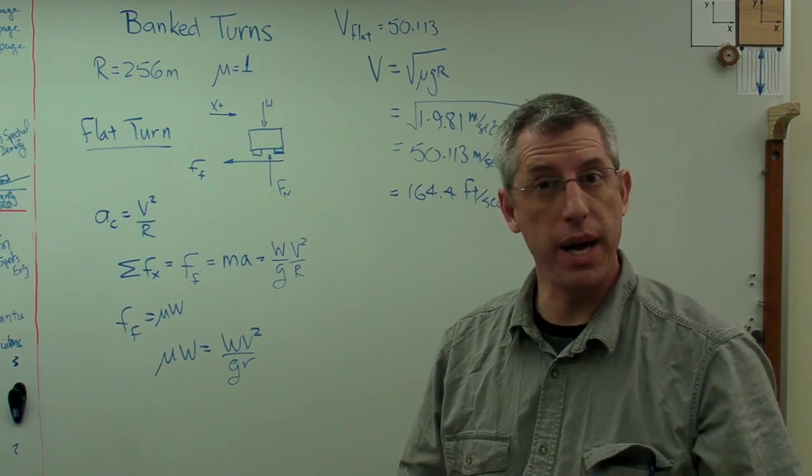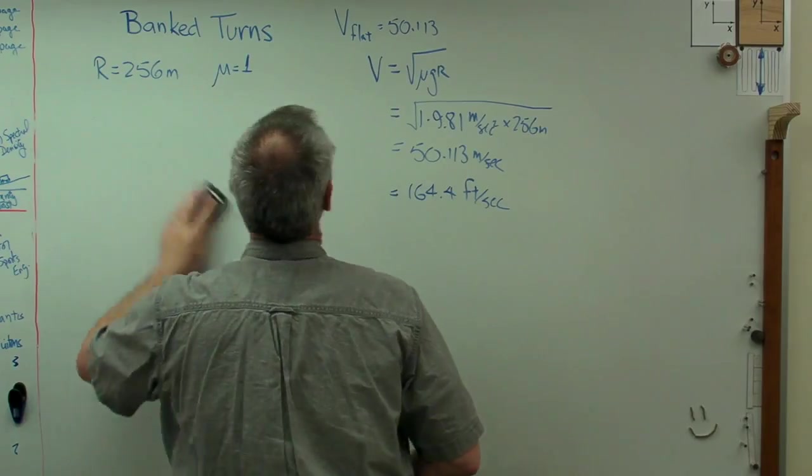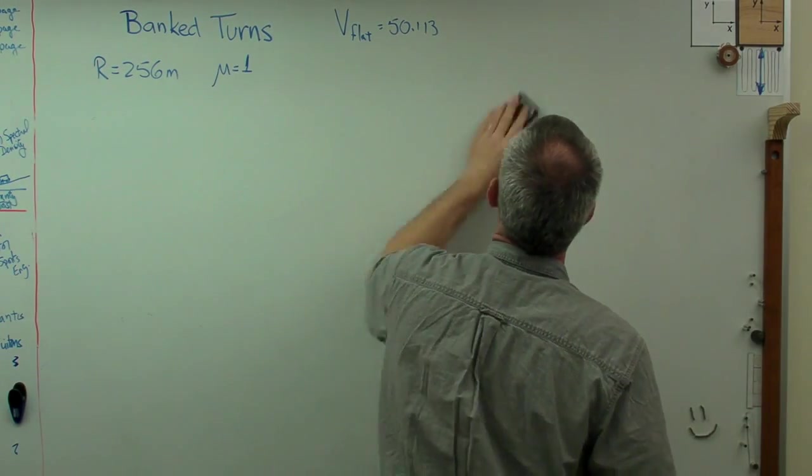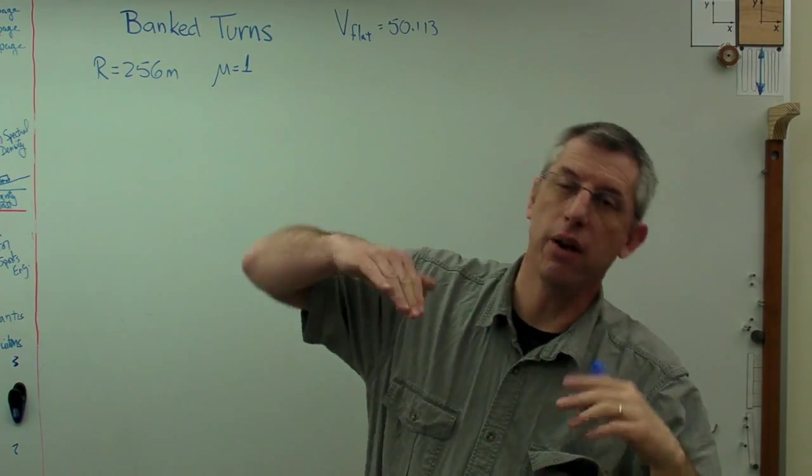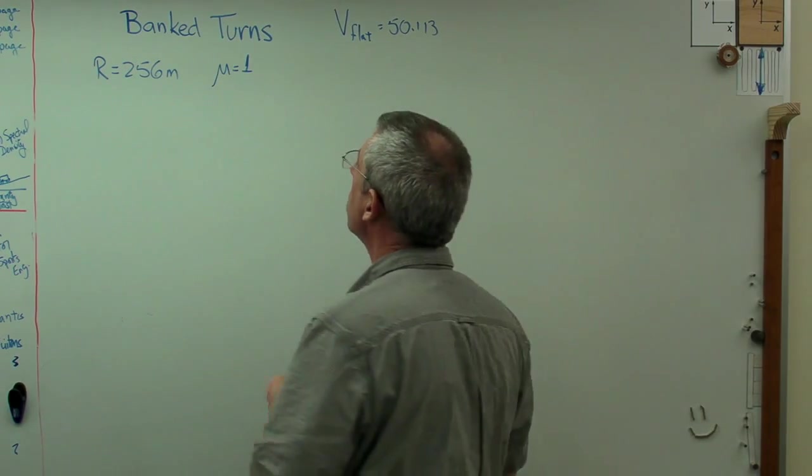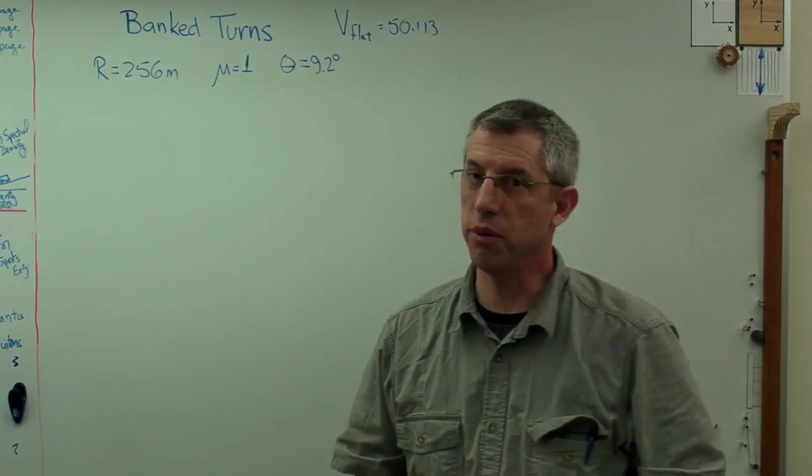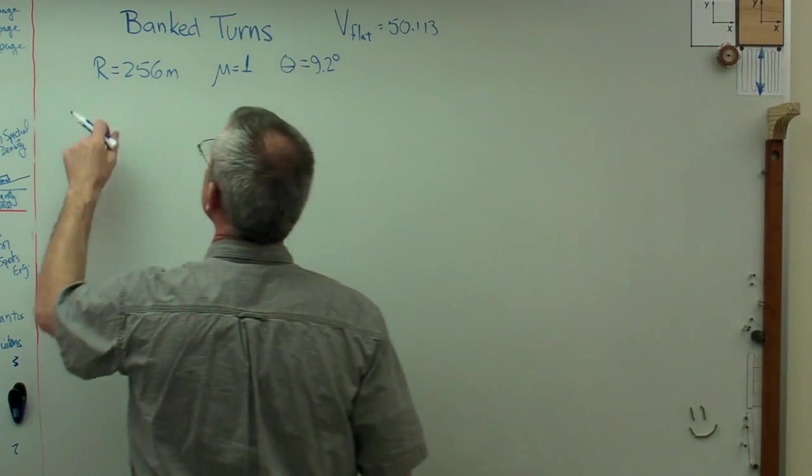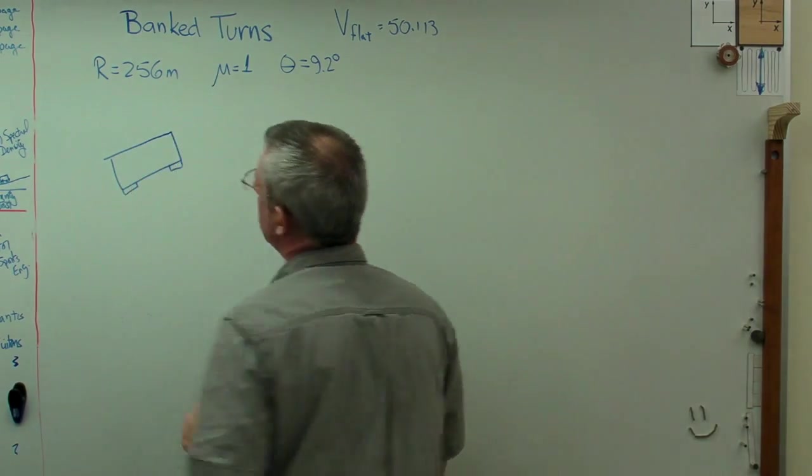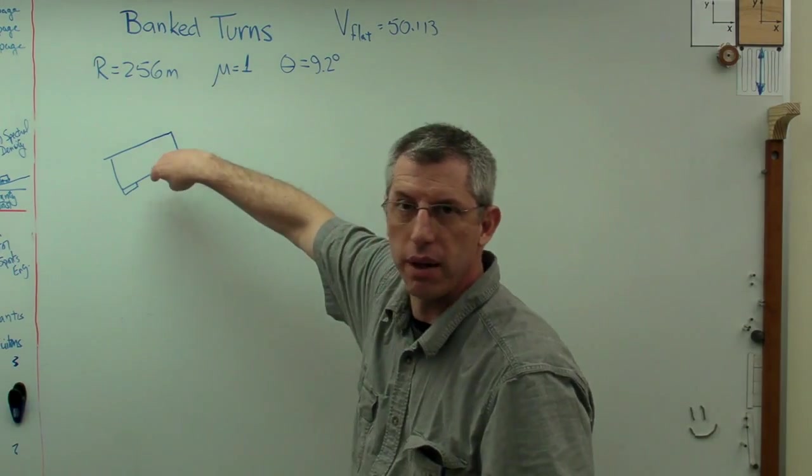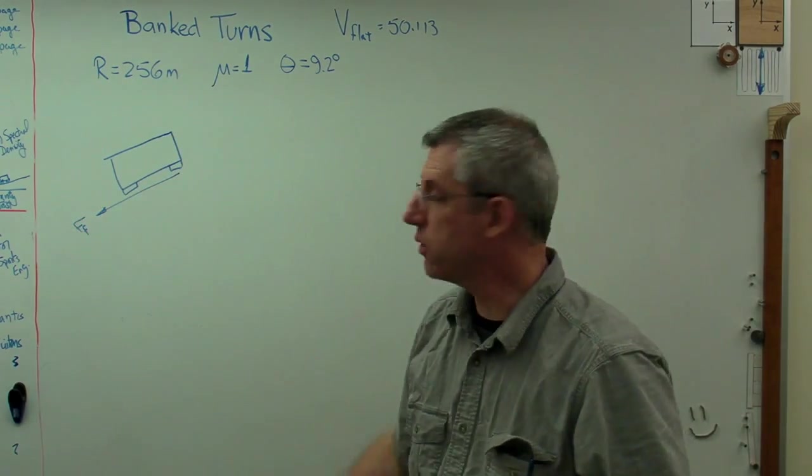Now what if the turn is banked? We should calculate a faster speed through the turn. Let me get rid of all this stuff and we're going to make one change and draw the car at an angle, going around a turn that's at an angle. In the Indianapolis racetrack, the bank angle is 9.2 degrees. Where that 9.2 degrees comes from I have no idea, but that's what it lists on their website.